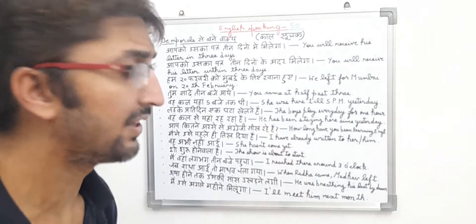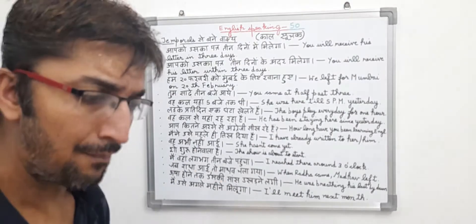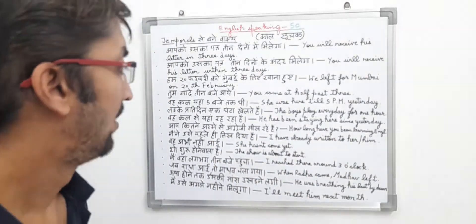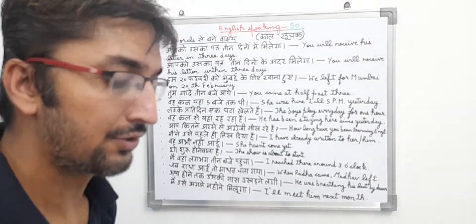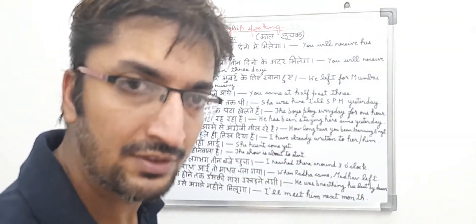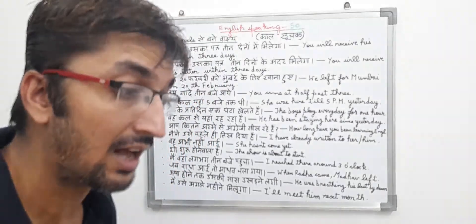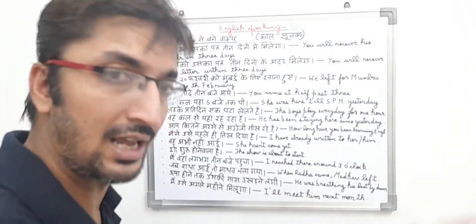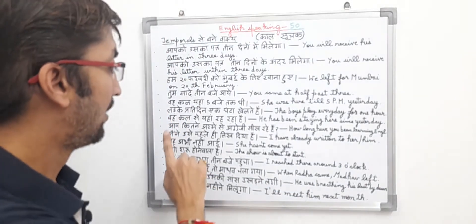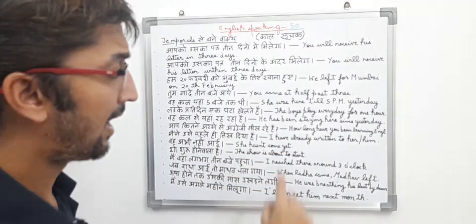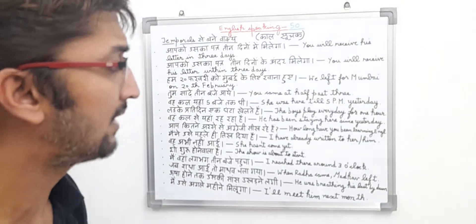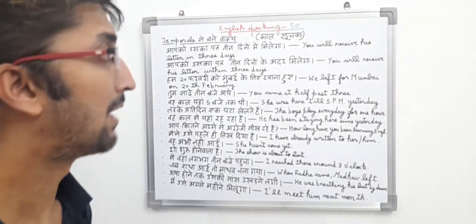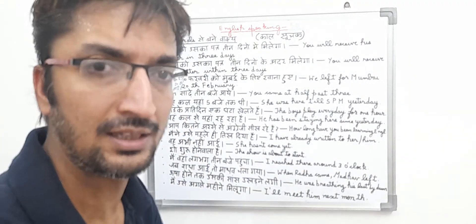How long have you been learning English? In this sentence, a person is trying to ask another person about time. So in English: how long have you been learning English? It is an interrogative sentence because the person is basically asking about the time period — from which time period the person has been learning the language. It is a present perfect continuous sentence, and it is an interrogative type sentence in which a perfect time period duration is being asked.